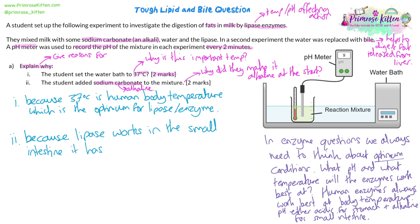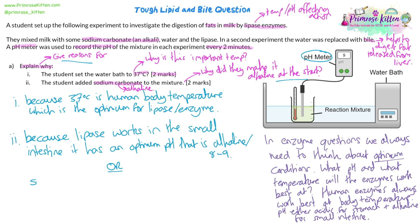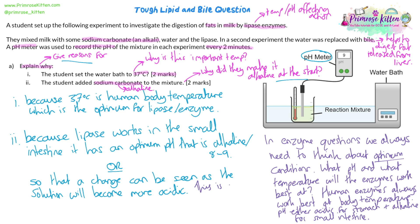Both options work for part ii. First: because lipase works in the small intestine and has an optimum pH that's alkaline, around eight to nine. Or: so that a change in pH can be seen, as the pH is going to decrease and become more acidic. That second answer is about knowing where they're going with asking this question — thinking about why we're measuring pH from a more practical point of view.